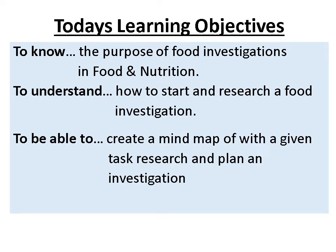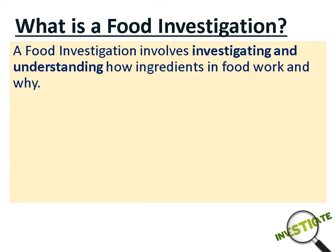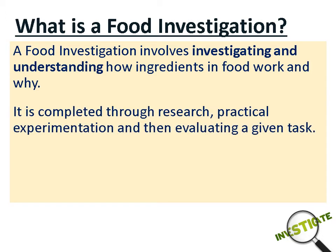We're going to be looking at a task, then researching, and then putting that into an annotated investigation. A food investigation involves investigating and understanding how ingredients in food work and why. We look at a particular food or ingredient and unravel it — how is it working, what is it doing in food, why is it there, what is it complementing, and what is its molecular structure. It's completed through research, practical experimentation, and then evaluation.